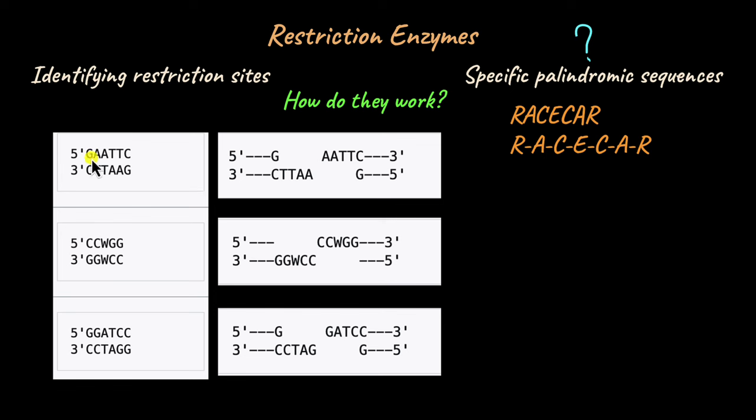For example, if you take this restriction site 5' to 3' G-A-A-T-T-C. If you look at this direction 5' to 3' G-A-A-T-T-C, this is a palindromic restriction site. And this restriction enzyme cuts here and here, giving these sort of hanging pieces, also known as overhangs. We'll talk more about that later. So this is how restriction enzymes work: they recognize these restriction sites, bind somewhere at or near the site, and cut at specific regions in this restriction site.